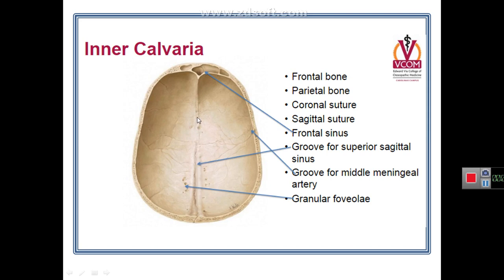The superior sagittal sinus lying in this groove on the inside of the sagittal suture is one of the venous sinuses formed by the dura, one of the dural layers of the meninges. On the sides of this groove there are many fovea or pits called fovea for arachnoid granulation, where the arachnoid matter forms tufts of tissue. These pits serve for absorption of the cerebrospinal fluid.